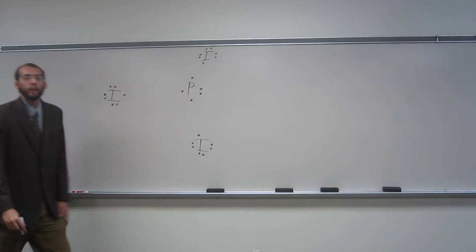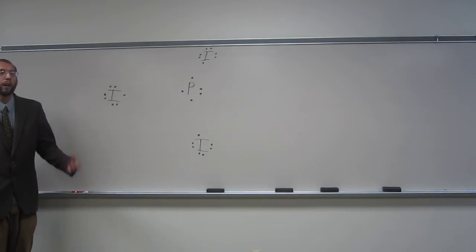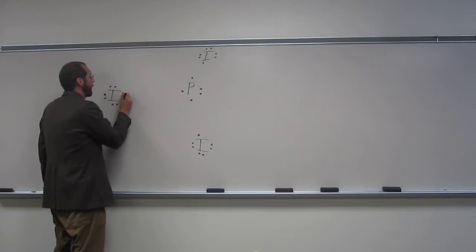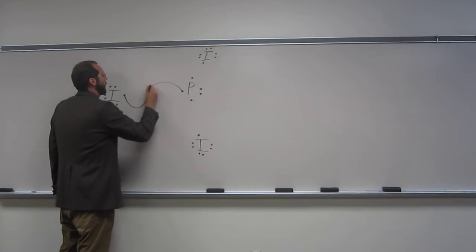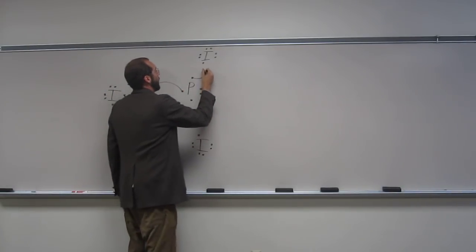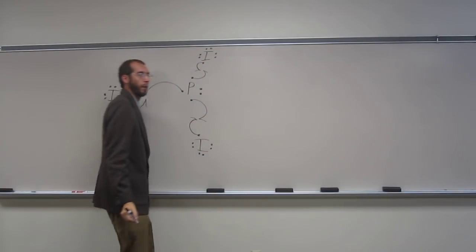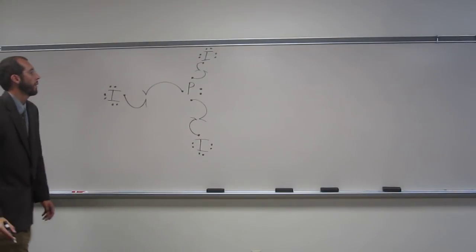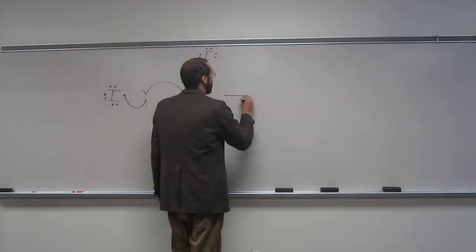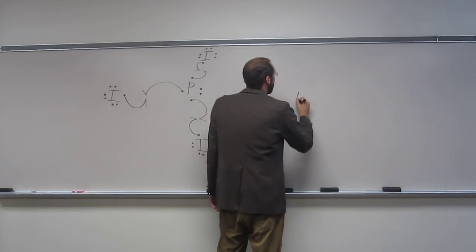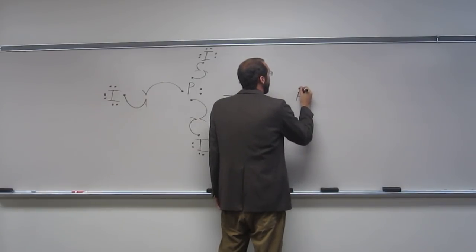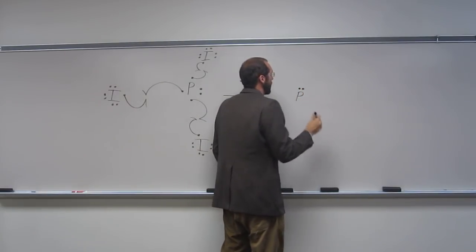Is everybody okay with that? And now what we do is draw what we call fishhook arrows. The motion is one electron. Like that. And we make this compound called phosphorus triiodide. And I'm just going to turn it over.